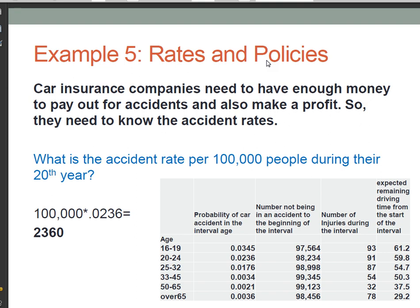In this last example, we're going to look at rates and policies. Car insurance companies need to have enough money to pay out for accidents, and also to make a rather large profit, apparently. So they need to know the accident rates. They need to have as much information as humanly possible about accident rates and costs and ages and everything, so that they can collect enough money to make sure that they have enough money to pay out for any accidents that come up, and they have enough money to pay for their business, basically.